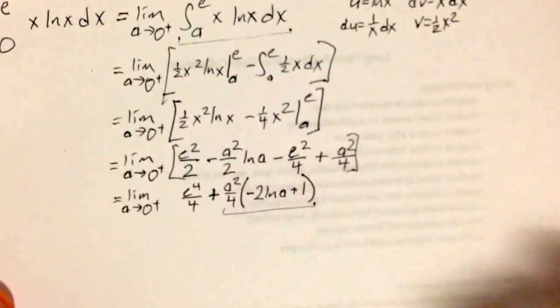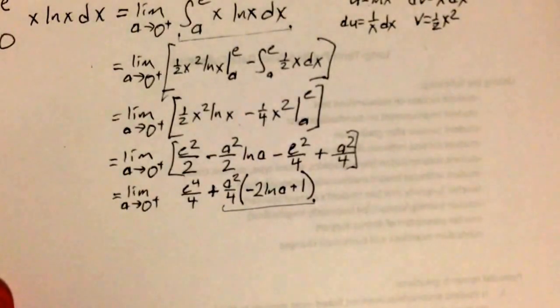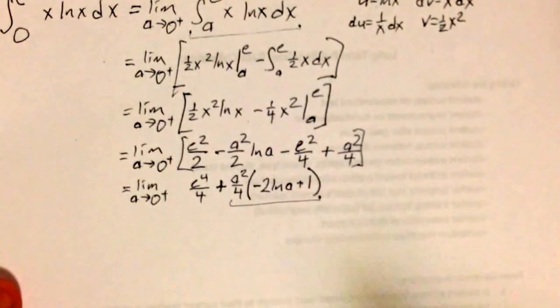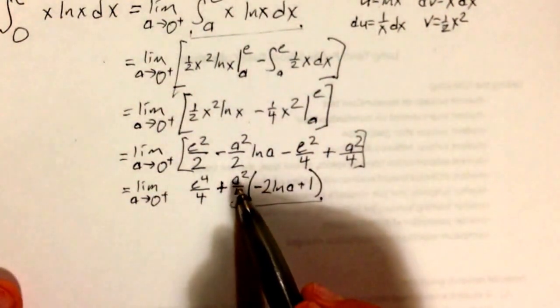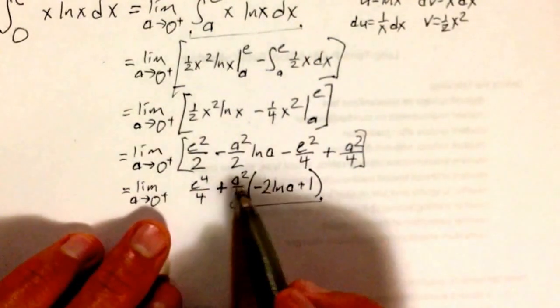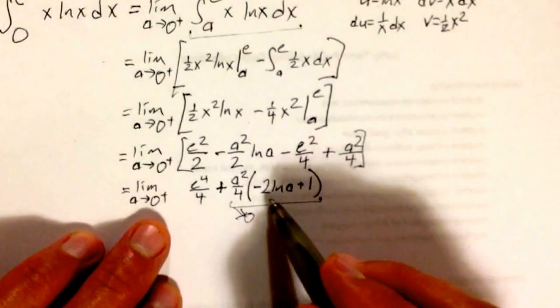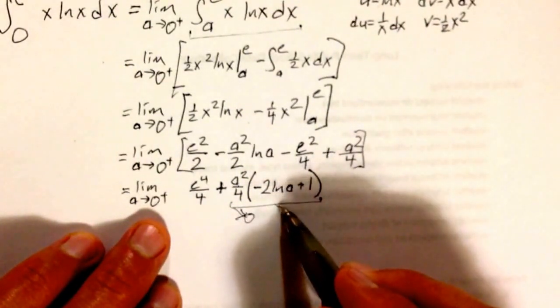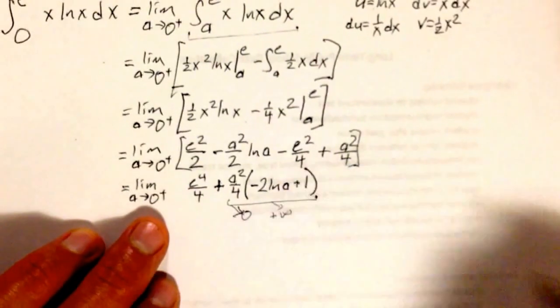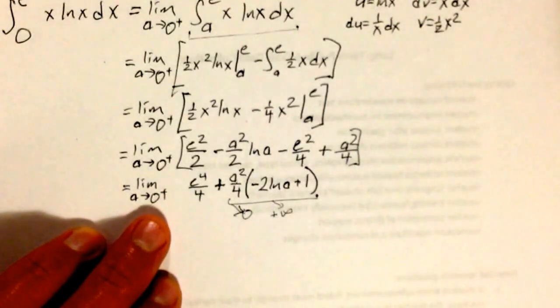The big question is, what happens to this as a goes to infinity? Well, that is a great question. The problem is, this is an indeterminate form for a limit. As a goes to 0, a squared goes to 0. And as a goes to 0 here, this is going to go to positive infinity. Negative 2 natural log of 0. What exactly are we going to do with that behemoth?